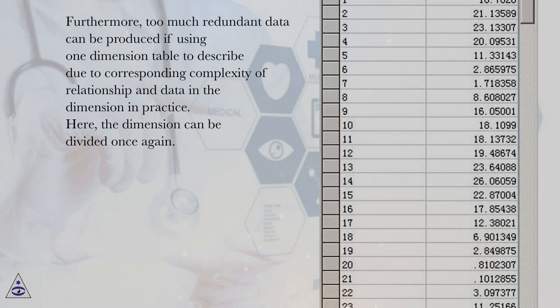Furthermore, too much redundant data can be produced if using one dimension table to describe due to corresponding complexity of relationship and data in the dimension in practice. Here, the dimension can be divided once again.